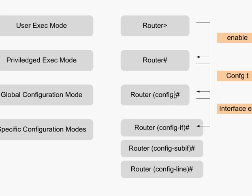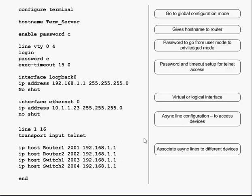In configuration mode you can do your configuration, and there are different specific sub-configuration modes as well — for example, interface and line. To enter global configuration mode you enter 'config t'.